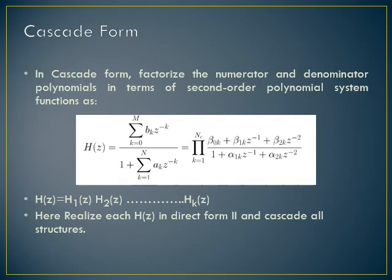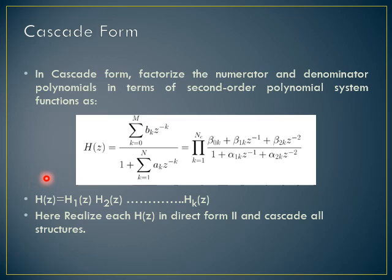In cascade form, we factorize the numerator and the denominator polynomial in terms of second order polynomial system function. This is a transfer function where the numerator represents the zeros and the denominator represents the poles. The transfer function H(z) is equal to H1(z) times H2(z) through Hk(z). We realize H(z) in direct form 2 and cascade all together to make one cascade form structure. Each H1(z) through Hk(z) is realized in direct form and they are all cascaded together.